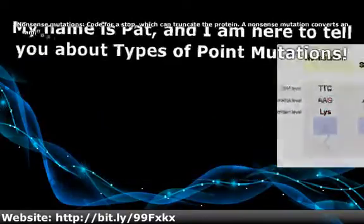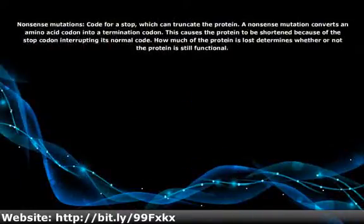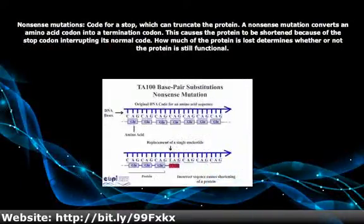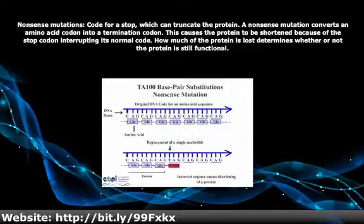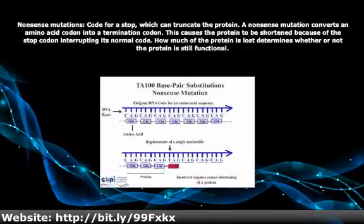Nonsense mutations code for a stop, which can truncate the protein. A nonsense mutation converts an amino acid codon into a termination codon.